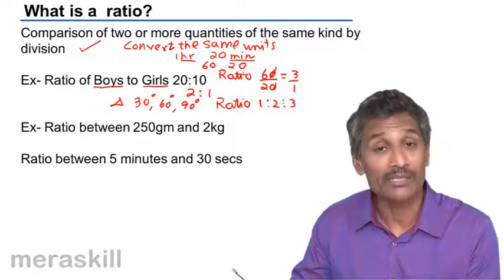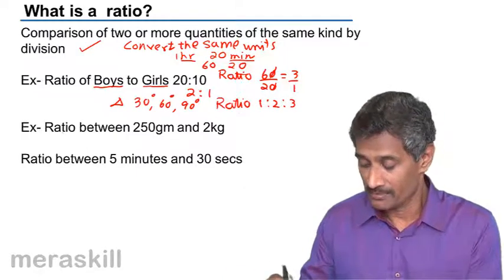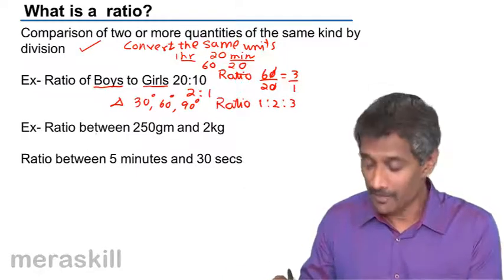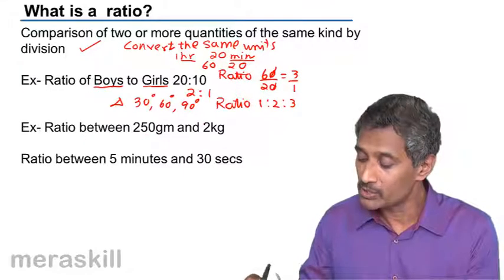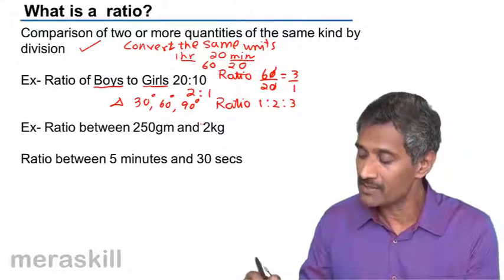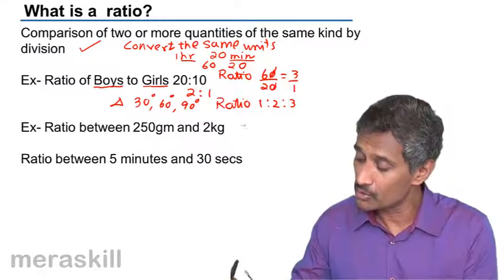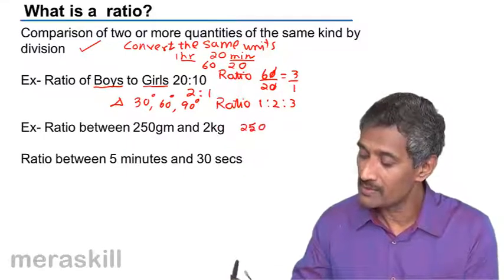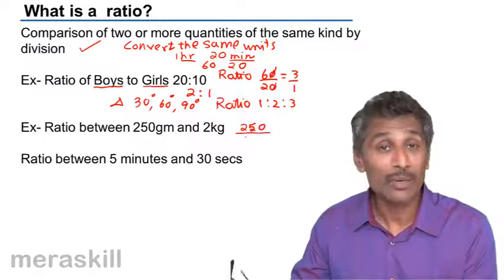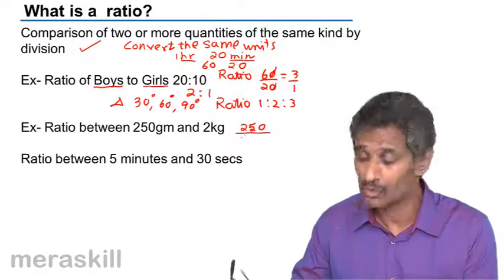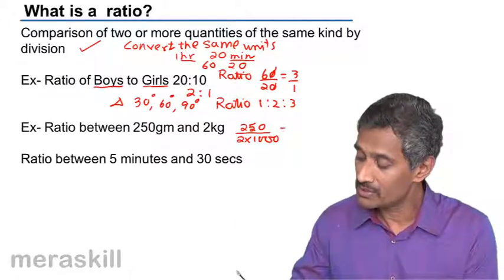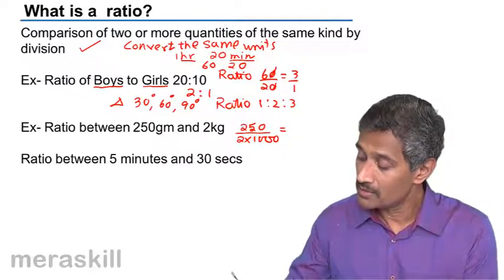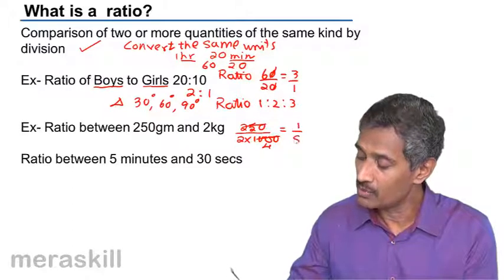Similarly, applying the concept of maintaining the same units: the ratio between 250 grams and 2 kg. Since 1 kg equals 1000 grams, we write 2 kg as 2 into 1000, which is 2000 grams.